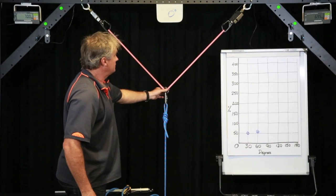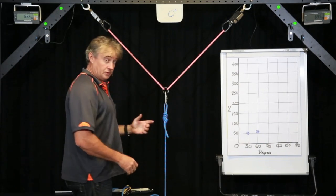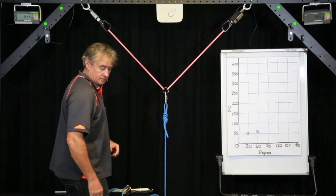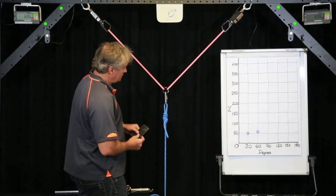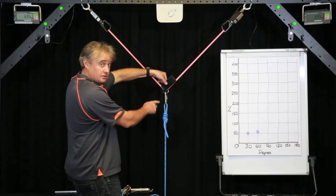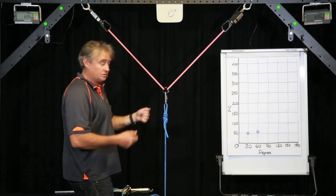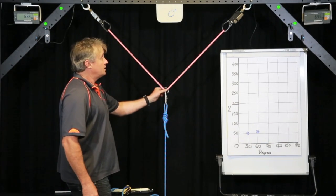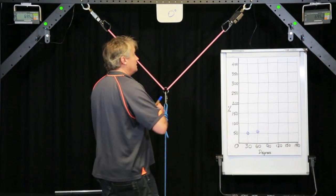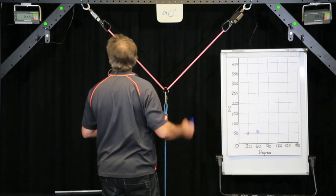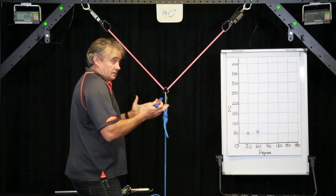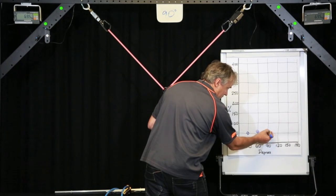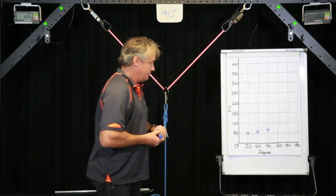We've got a 90 degree internal angle there. That angle between those, 90 degrees. I can use a smartphone to do that. I know the corner of a smartphone is 90 degrees. I could use a pad or a book or any object that's got right angle corners. So 90 degrees there. If we look on our load cell, on one side we've got 69.5, over here we've got 69.5. So they're exactly the same and they're roughly 70%. So at 90 degrees we've got 70% of the load on each anchor.